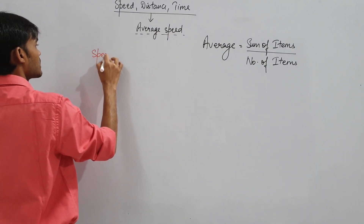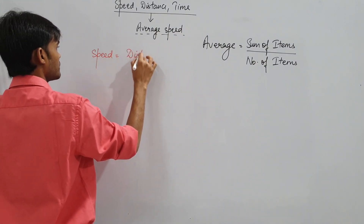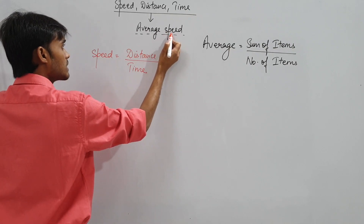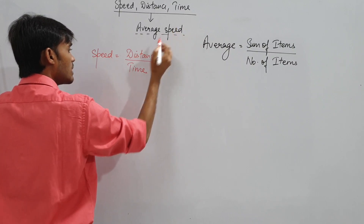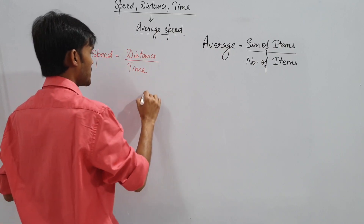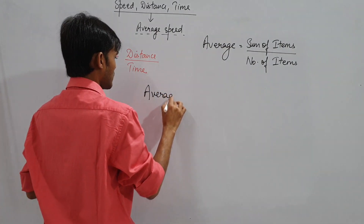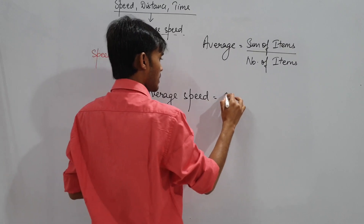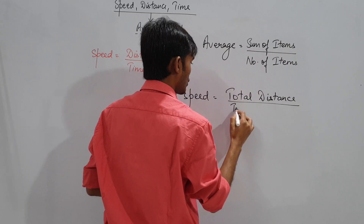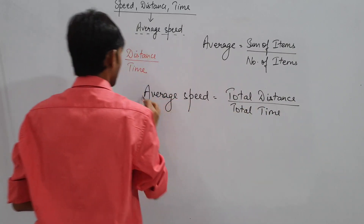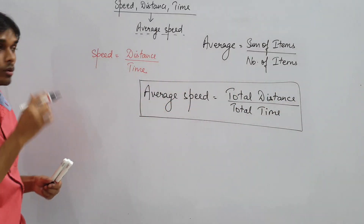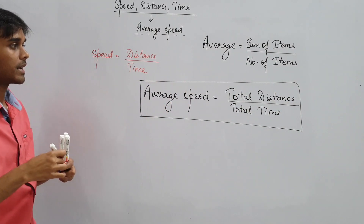Speed, as we know, is distance upon time. Since the terminology includes speed, it will follow that mother concept. Average speed is a very simple concept: average speed is equal to total distance divided by total time — kul duri divided by kul samay.